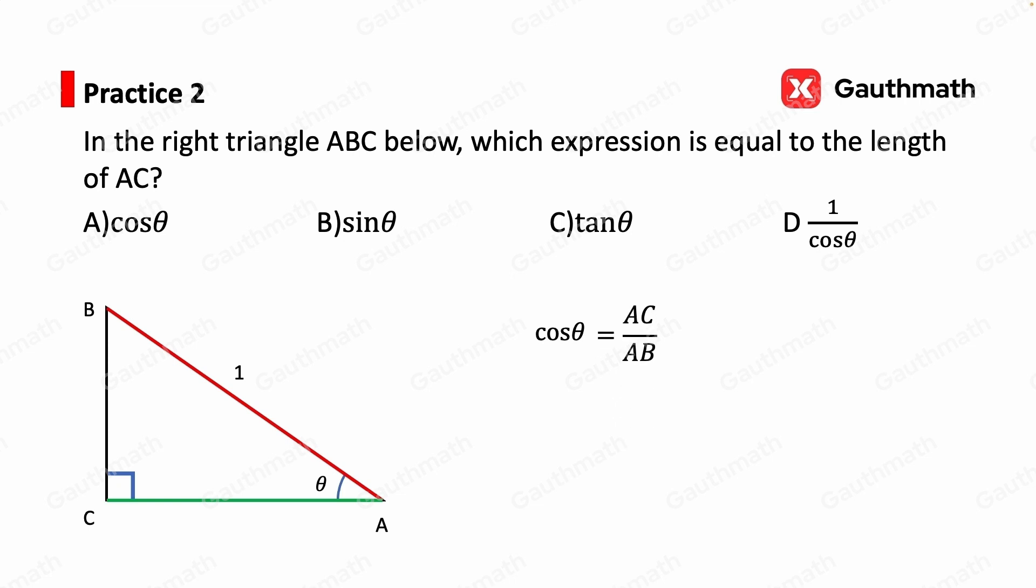Cosine theta is equal to AC over AB. Since AB is equal to 1, cosine theta is AC over 1, which equals AC. So cosine theta equals AC. Therefore, the answer is A.